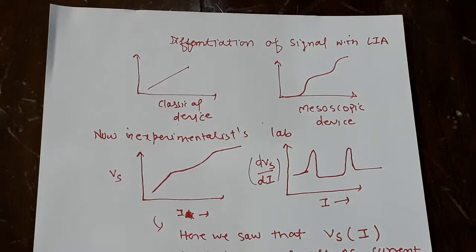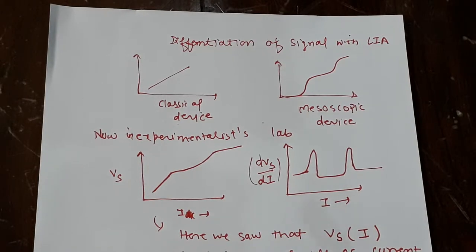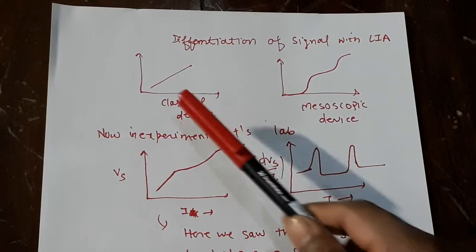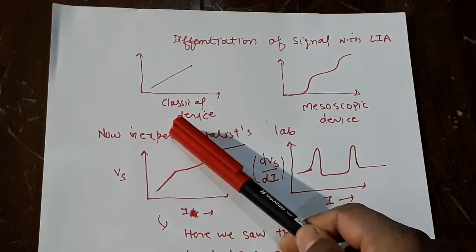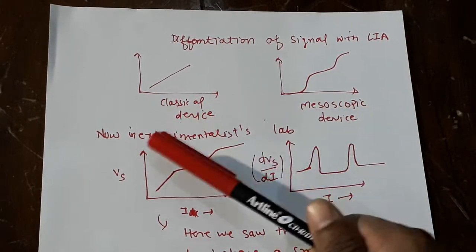So why we need the differential conductance measurement. If you see, I am giving a classical example. You take a big resistor and you measure V versus I, you will get a straight line.